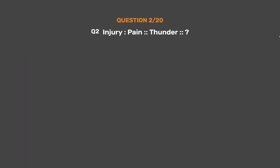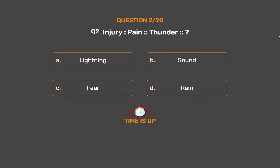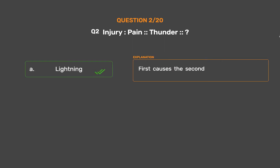Question No. 2. Injury : Pain :: Thunder : ? Option A: Lightning. Option B: Sound. Option C: Fear. Option D: Rain. The correct answer is Option A, Lightning. The first causes the second.